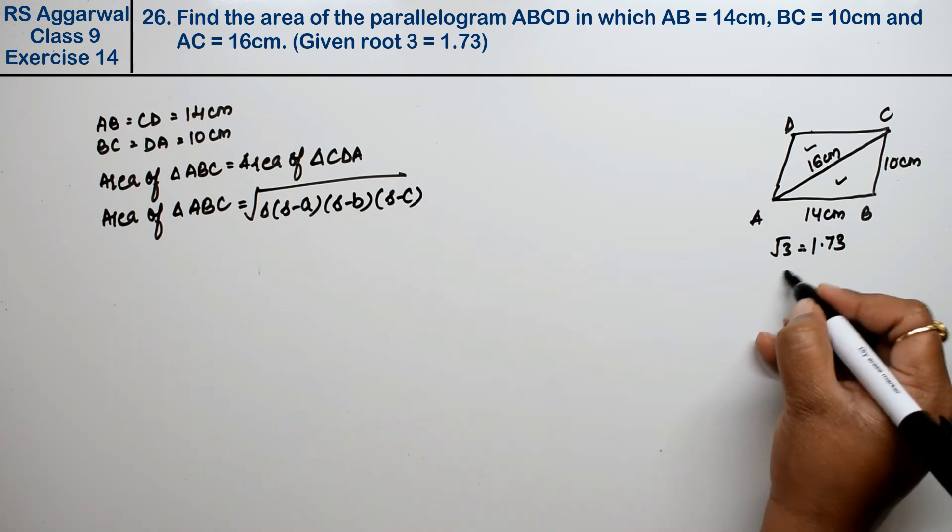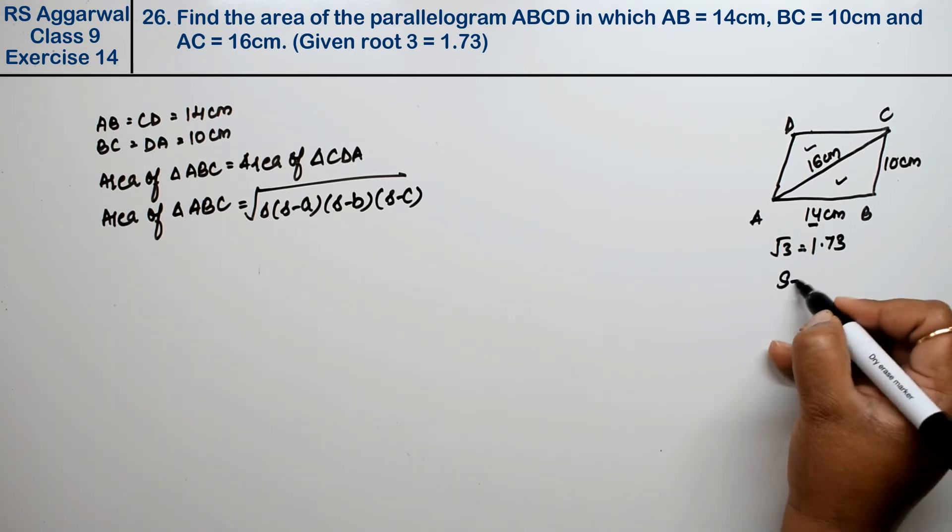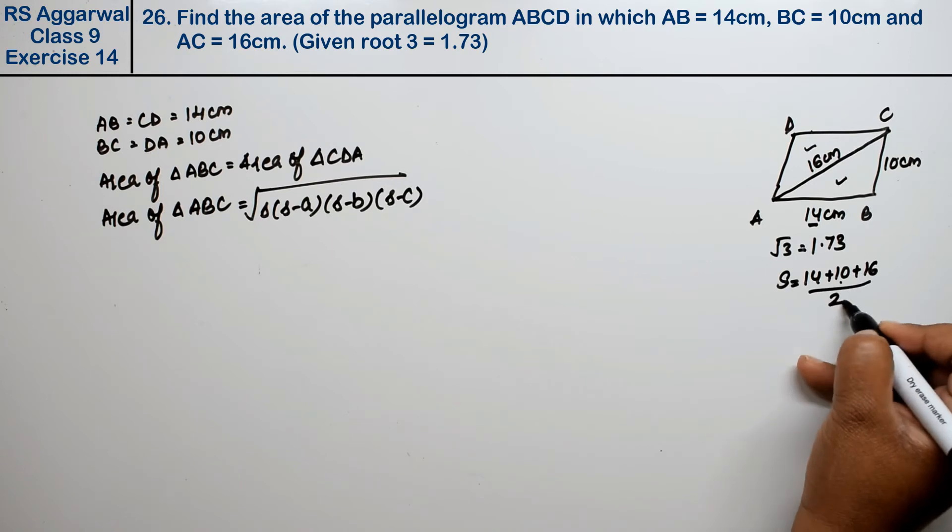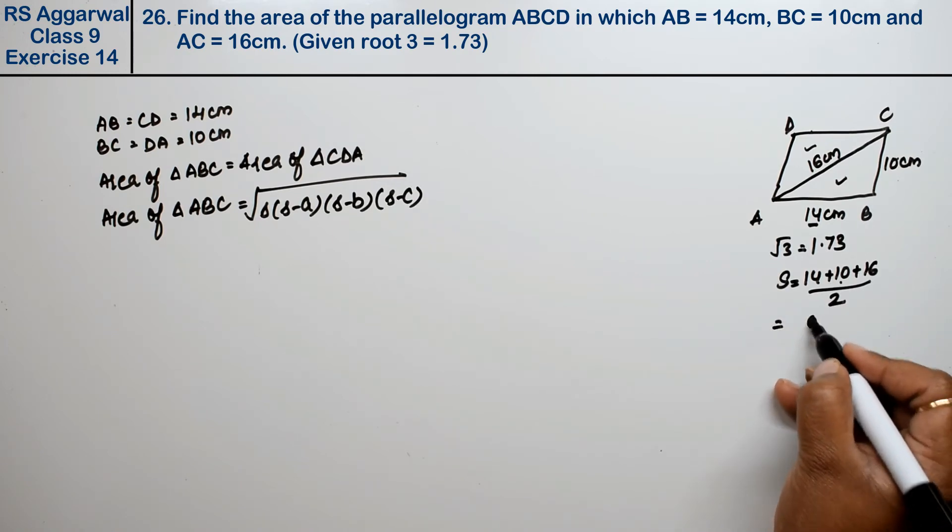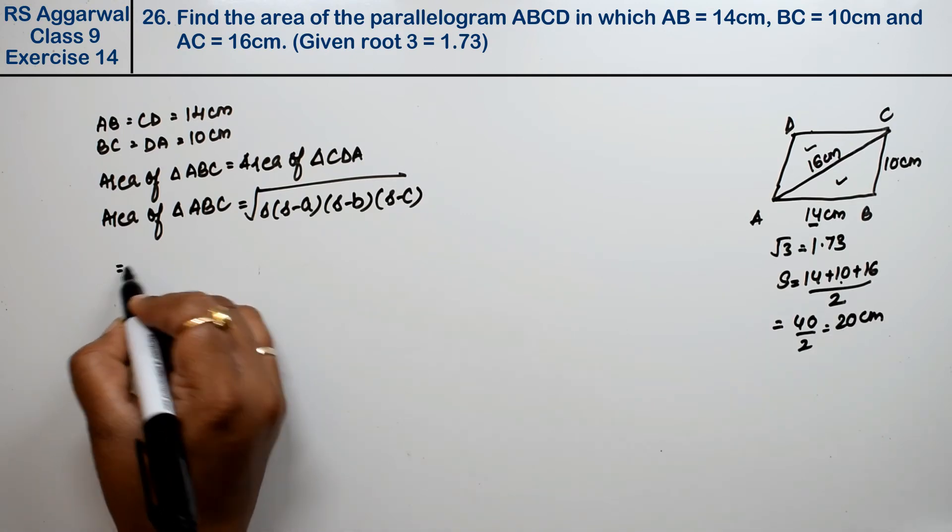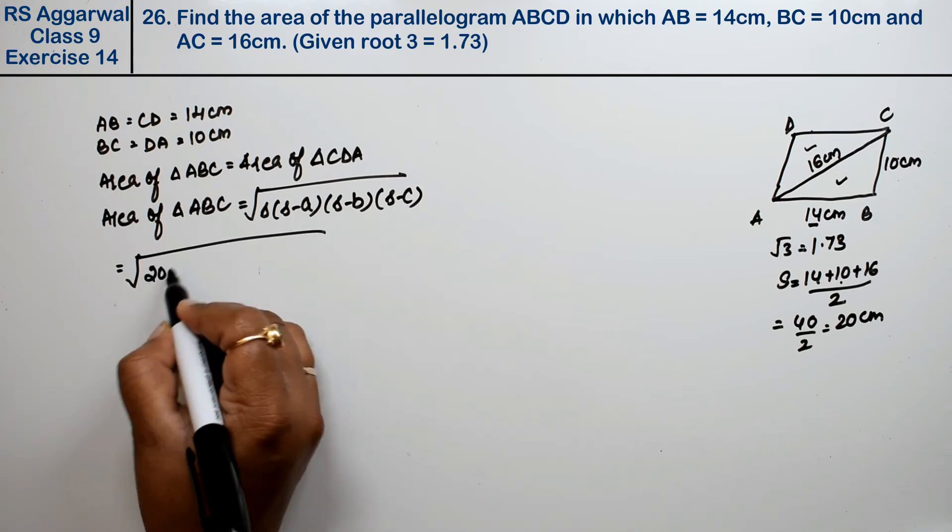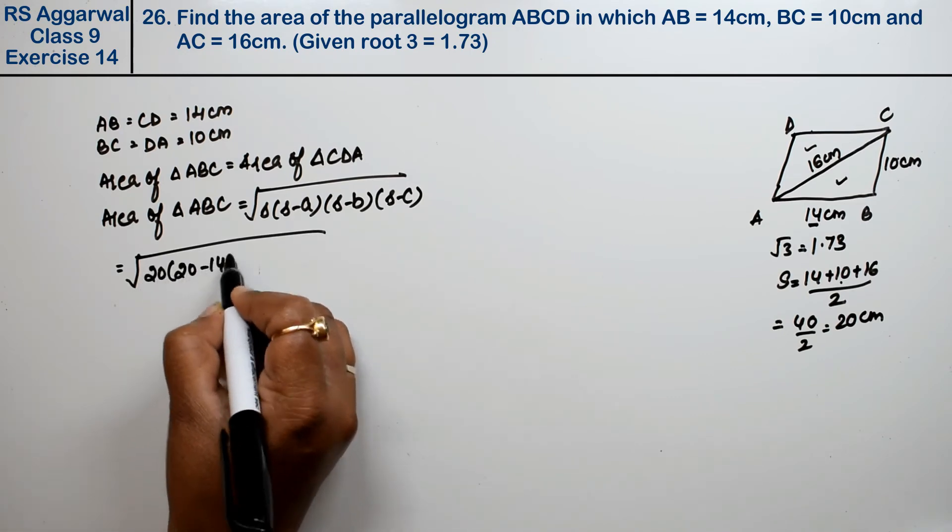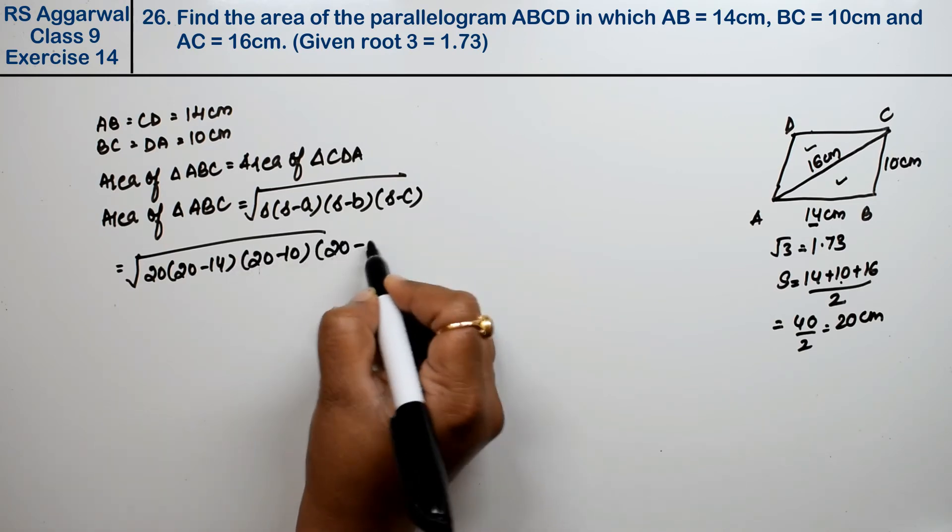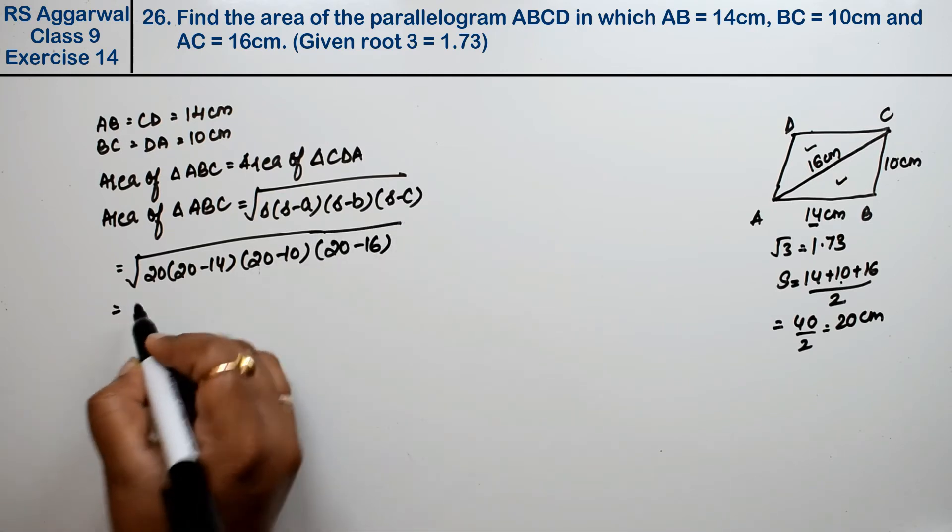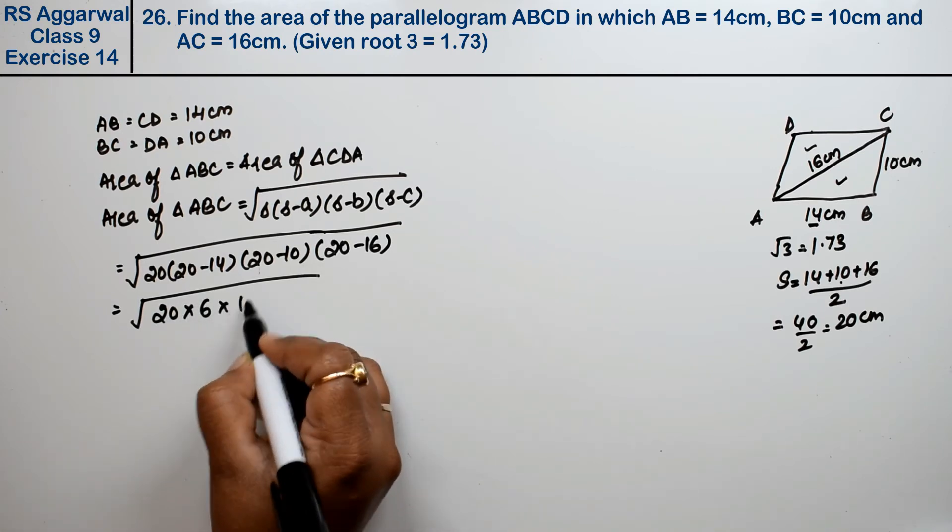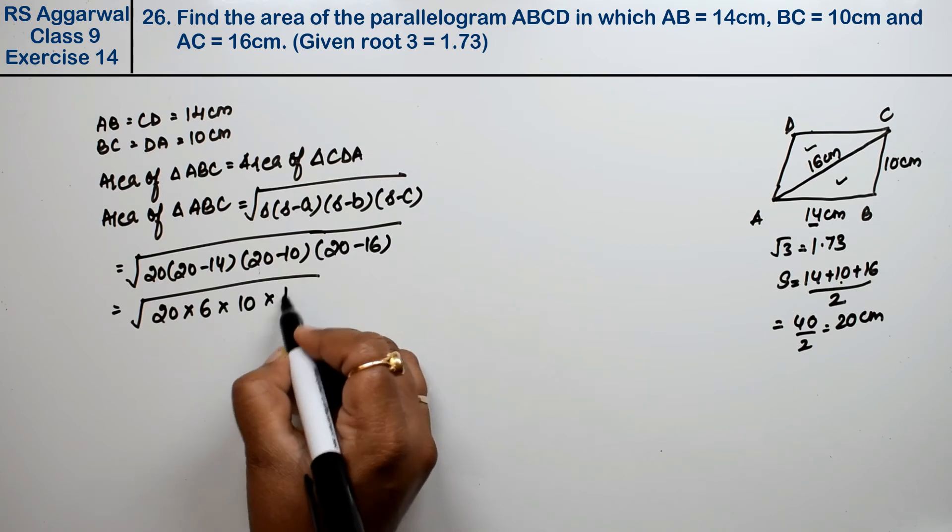So here we have 10 cm, 14 cm, 16 cm. We calculate the semi-perimeter: 14 plus 10 plus 16 divided by 2 equals 20. Now 20 minus 14 is 6, 20 minus 10 is 10, and 20 minus 16 is 4.